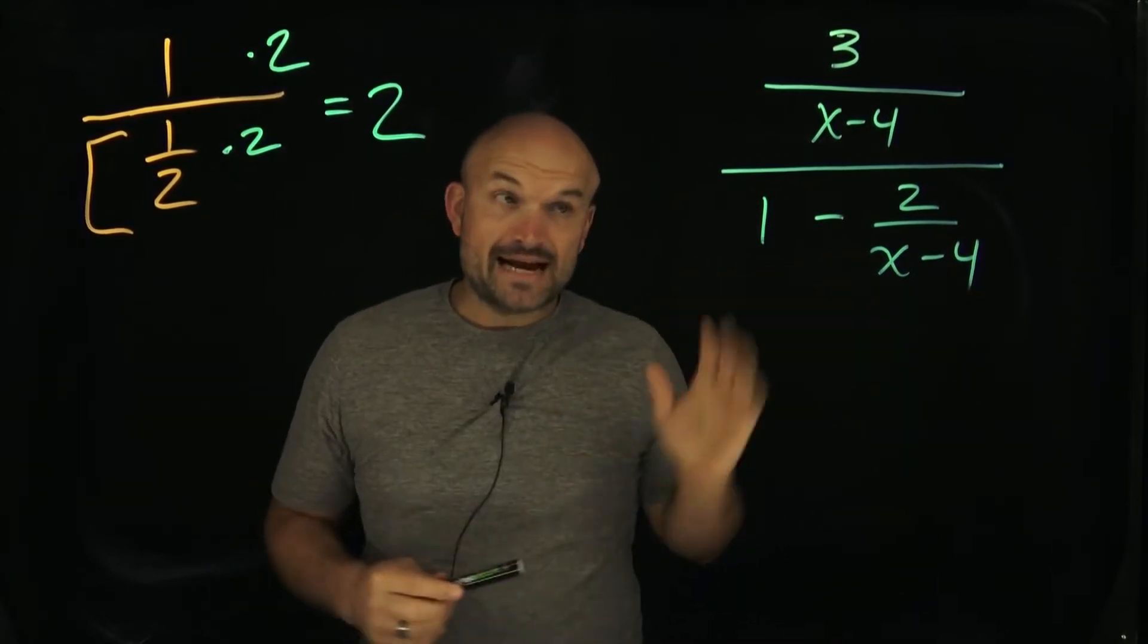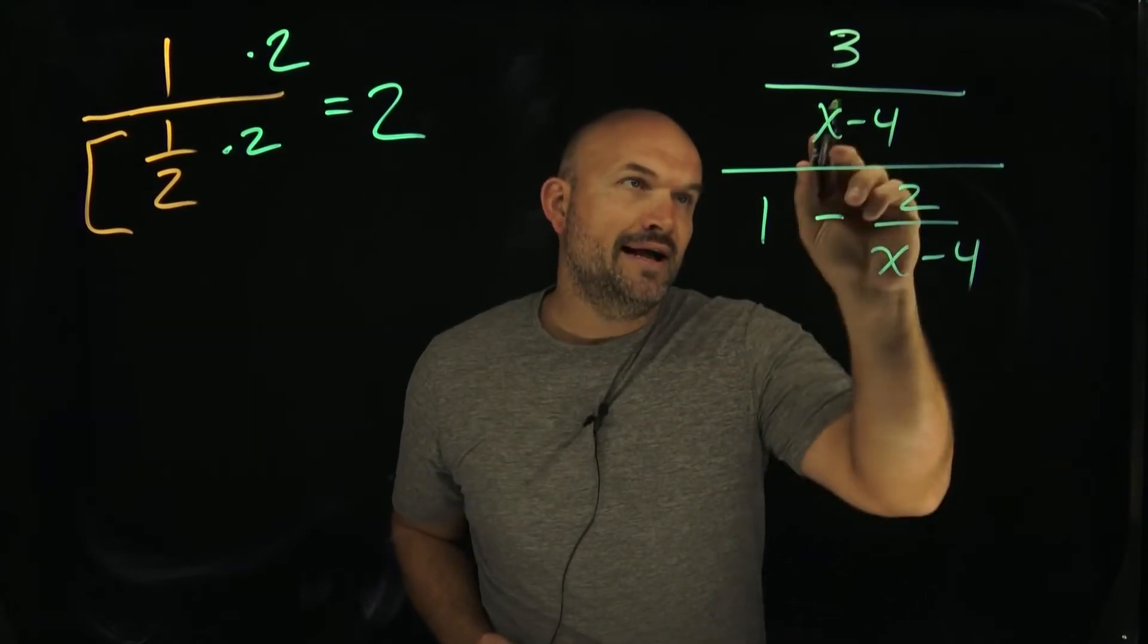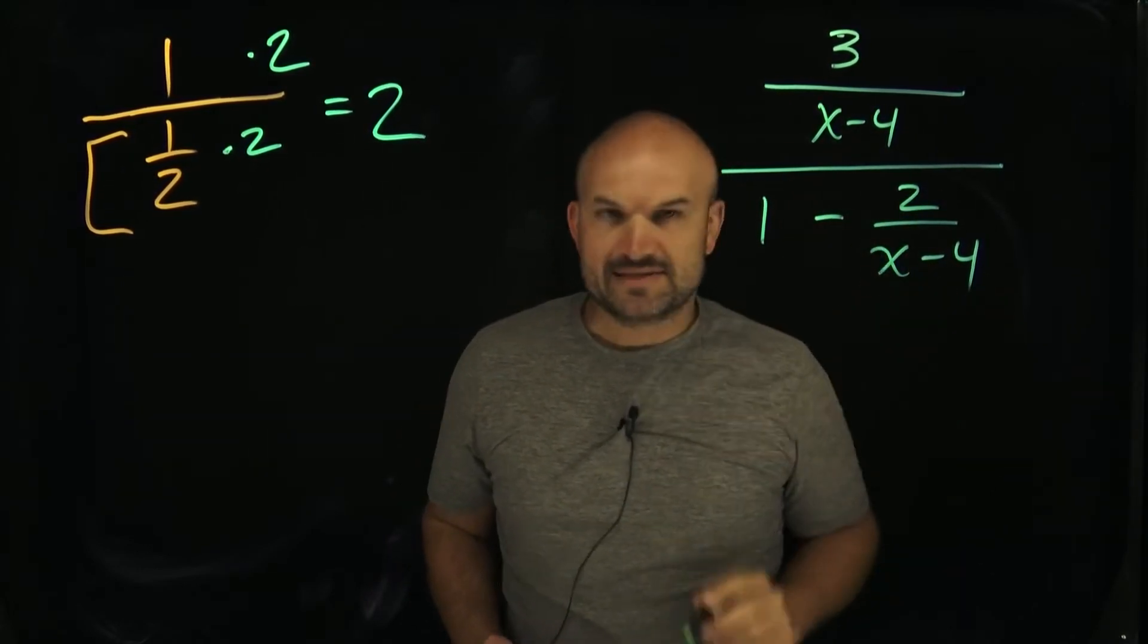So in this case, we have a lot of denominators, right? We have this big denominator, and then inside that big denominator, we have a denominator here, x minus 4, and a denominator over here, x minus 4.